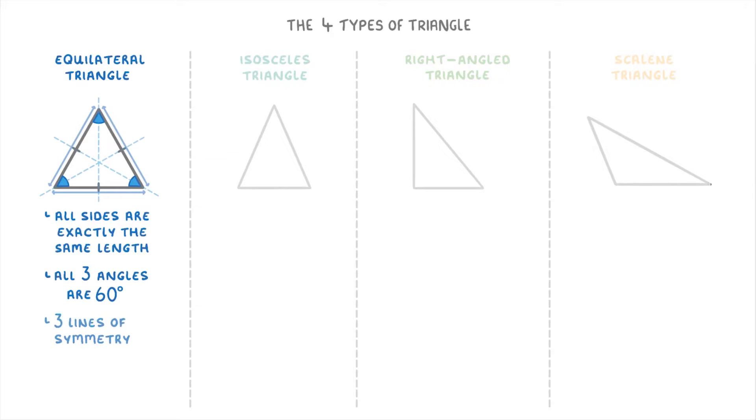Equilateral triangles also have three lines of symmetry and rotational symmetry of order three, which just means that there are three positions within a complete rotation that they look the same.